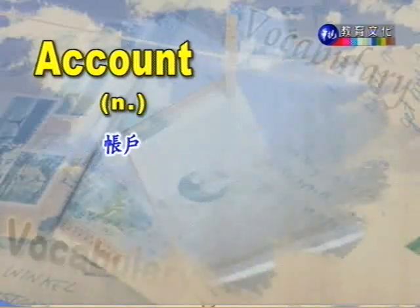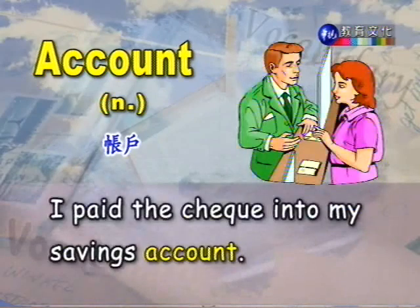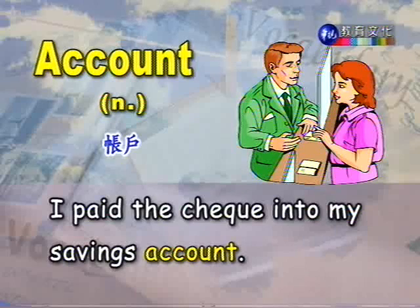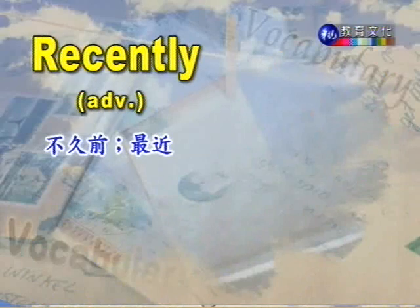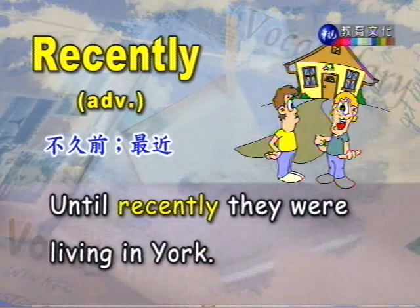下面一个单字是account，名词，账户。例句：I pay the check into my savings account. 我把支票存入我的储款账户。下面一个字，recently，副词，不久前、最近。例句：Until recently they were living in York. 一直到不久前，他们还住在York，英格兰的一个城市。